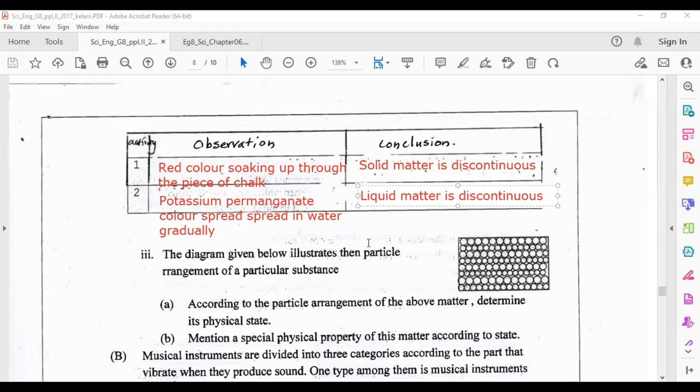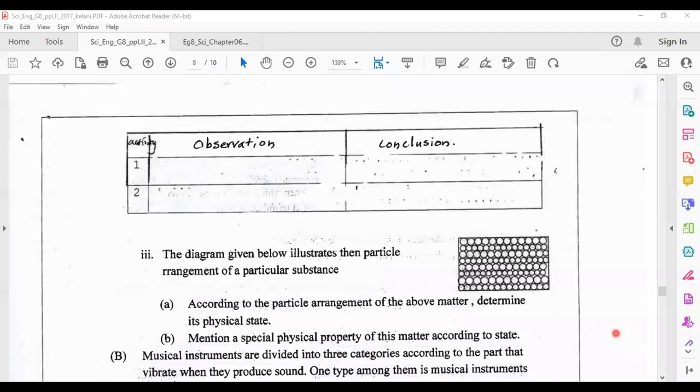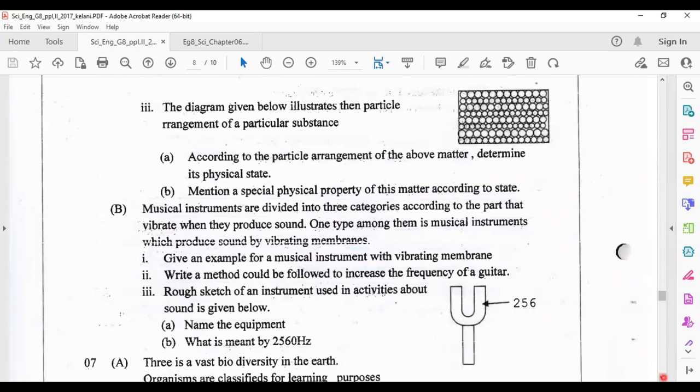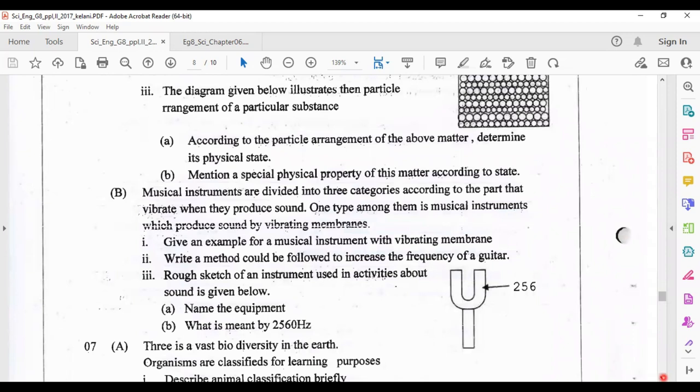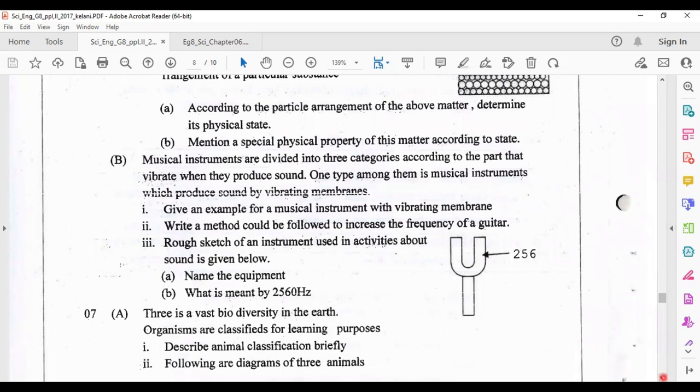Roman number three: the diagram given below illustrates the particle arrangement of a particular substance. According to the particle arrangement of the above matter, determine its physical state. You can see the particles are tightly packed, so the state is solid. Answer is solid state. Mention a special physical property of this matter. The special property is it has definite shape.